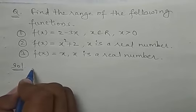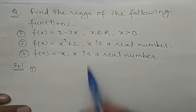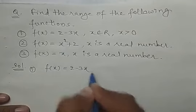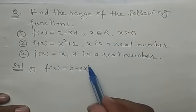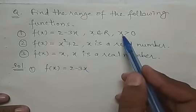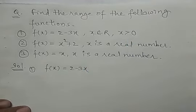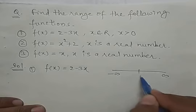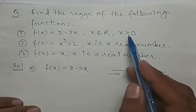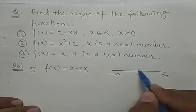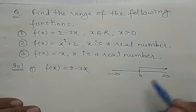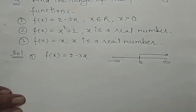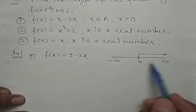Pehle dekhte hain — f(x) = 2 - 3x, aur x belongs to R (real numbers), aur x is greater than 0. Ab aapko pata hai ki real numbers ki range minus infinite to infinite hoti hai, aur beech mein 0 hota hai. Is mein se bhi yahan ek special condition di hai: x ki sari values 0 se greater hain. Agar domain ki baat karun, toh domain 0 se lekar infinite ke beech mein hoga.